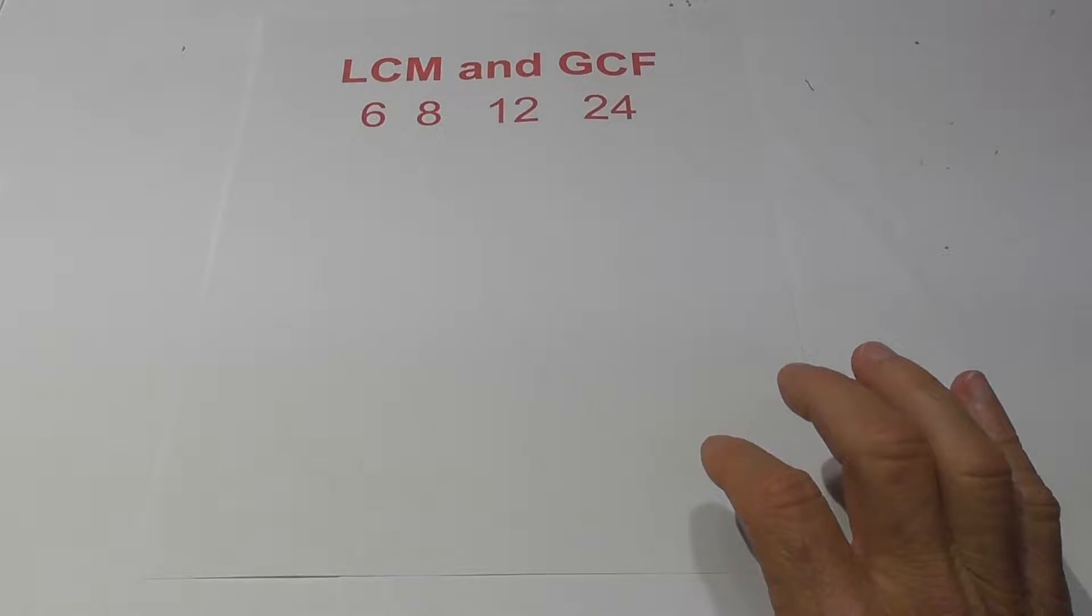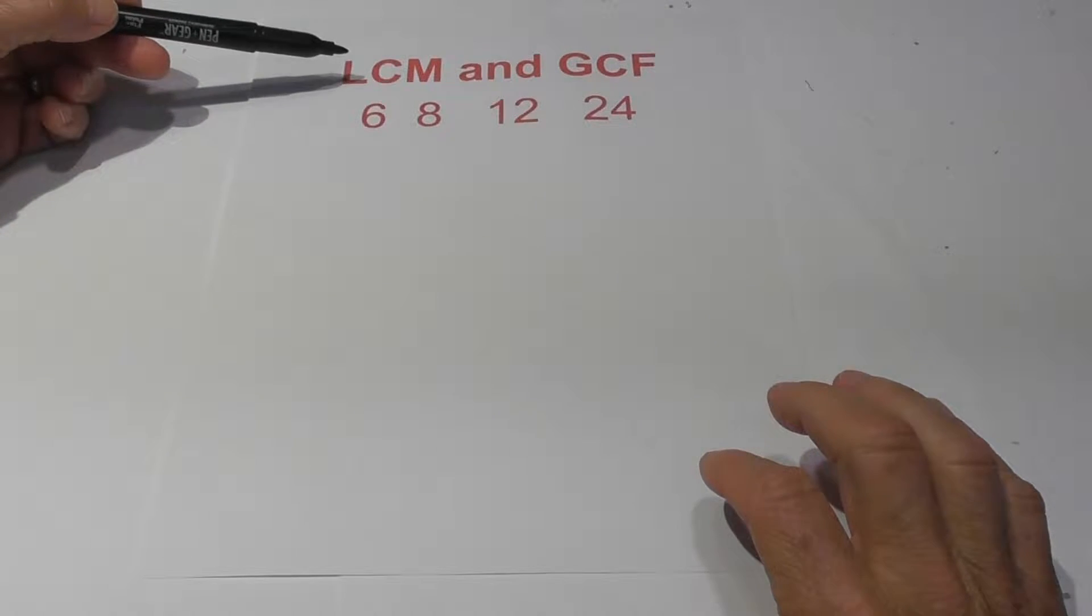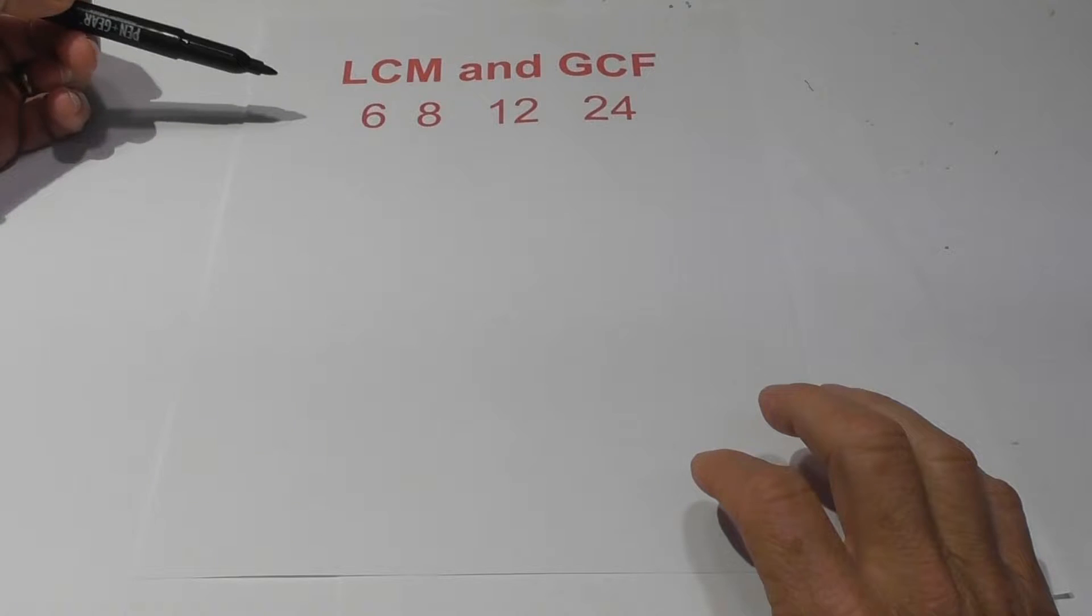Welcome to Moo Moo Math and Science. In this video, let's learn how to find the least common multiple and the greatest common factor of four or more numbers. But in fact, this would actually work for three.